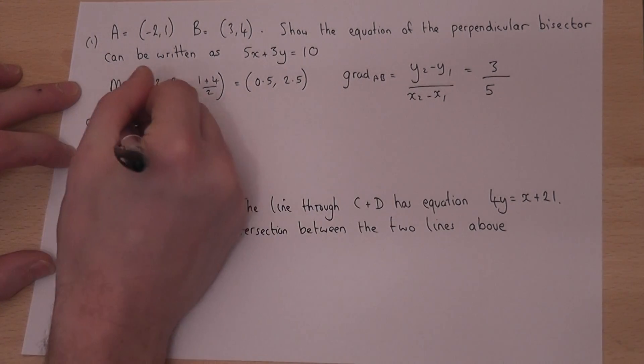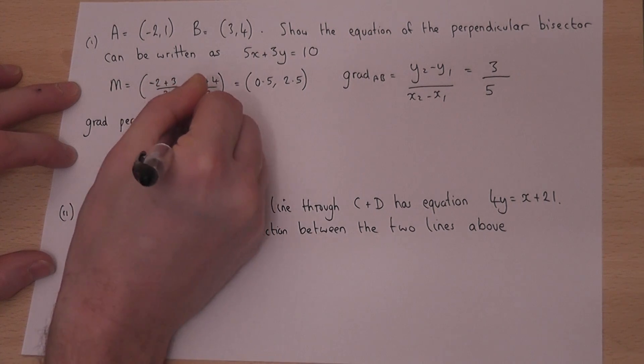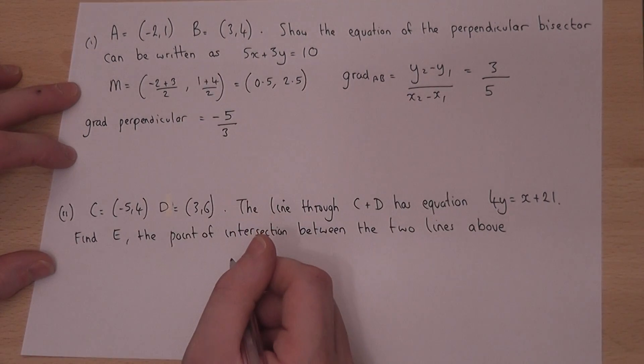So the gradient which is perpendicular must be, well, we reciprocate, so 5 thirds, and change the sign. So minus 5 over 3.